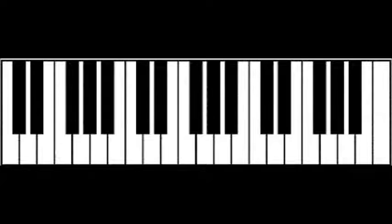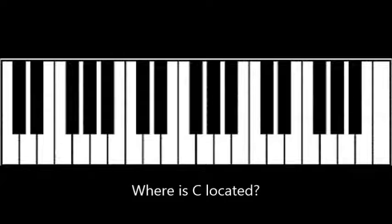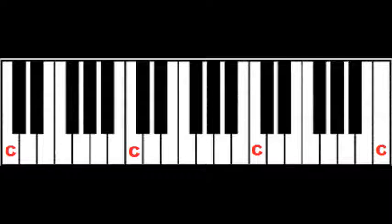The black keys help us identify the location of white key notes. Let's find out where C is located. C is located before a set of two black keys. There are many C's on your piano — wherever you see a set of two black keys, the white key just before it is C.